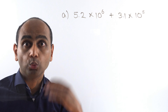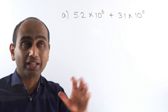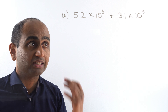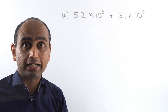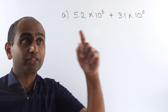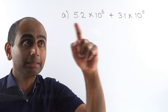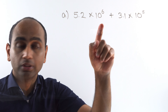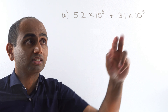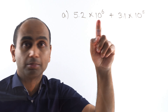To add these together, what I want to do is rewrite one of them so that both numbers in standard form have the same power of 10. Normally what I want to do is pick the higher power of 10 and keep that the same, and rewrite the other as something times 10 to the power of 6 to match.